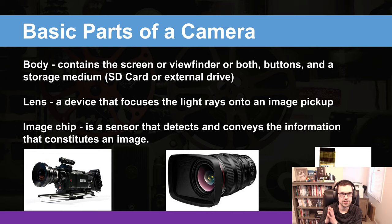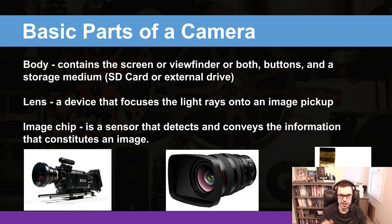The first part that makes up a camera is called the body. The body section of the camera is where you attach everything to it. It usually contains a screen, a viewfinder — something you look through to take your video. It has buttons, a slot for storage medium like an SD card or external drive, and it's where you attach your rig or anything else in the videography department. It's the base of the camera.